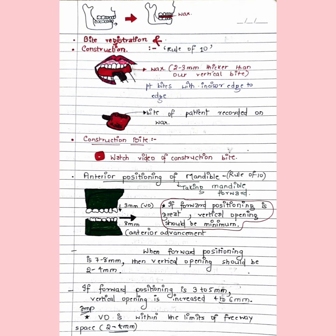If the discrepancy is about 4 to 5 mm — that is, we need to take the mandible forward by only 4 to 5 mm — we can correct the malocclusion in a single step. But if the total discrepancy, combining vertical opening and anterior advancement, totals 10 mm — here comes the rule of 10 — then we must do stepwise advancement, advancing the mandible forward in phases.